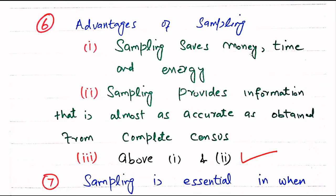Question number 6. Advantages of sampling — the right answer is Both 1 and 2. Sampling saves money, time, and energy. These three are the advantages of sampling. Also, sampling provides information that is almost as accurate as obtained from a complete census.